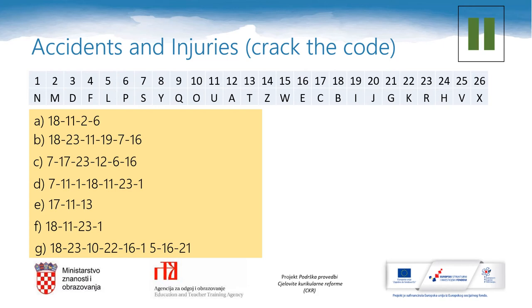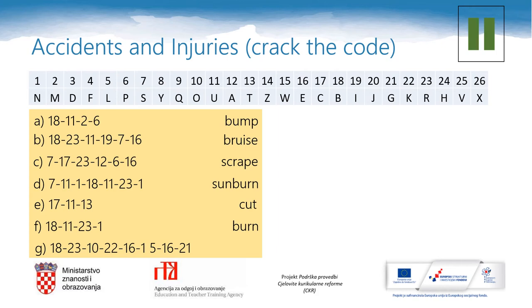The next task is accidents and injuries. In this task I need you to be detectives — you will have to solve two problems. The first one is to crack the code. Have a look at the numbers and the letters. Pause the video — can you write down what these seven words are? Let's check your answers: bump, bruise, scrape, sunburn, cut, burn, and broken leg. Well done, you've passed the first test.